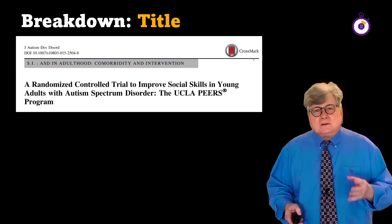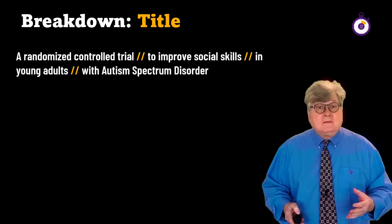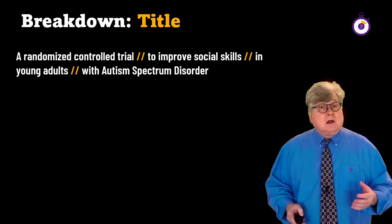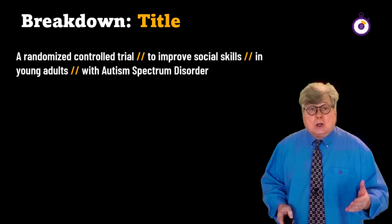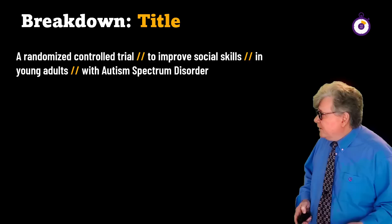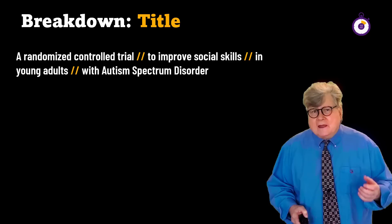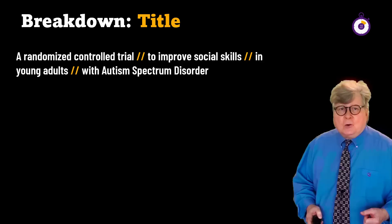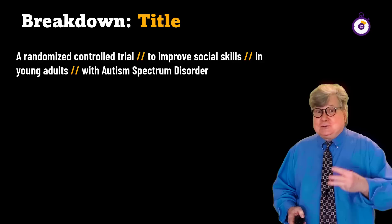The best way to do this is to divide the title into parts. For example: 'A randomized controlled trial' — so you know the article will discuss the results of a controlled trial involving participants. Next, 'to improve social skills' tells you the purpose of the study. 'In young adults with autism spectrum disorder' tells us to whom. Now we know what is being done, how it's being done, why it's being done, and to whom. You have a pretty good view of the whole article.